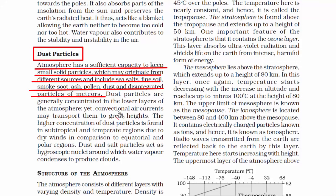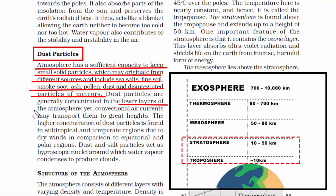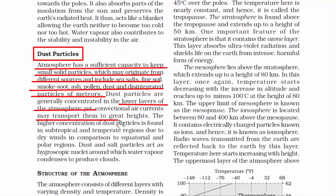Since dust particles are fairly heavier than water vapor, therefore they are generally found in the lower layer of the atmosphere, which are troposphere and stratosphere. Now it is the air movement that takes these dust particles to a greater height and a longer distance. Now I want you to remember this point. The higher concentration of dust particles is found in subtropical and temperate regions due to dry winds.